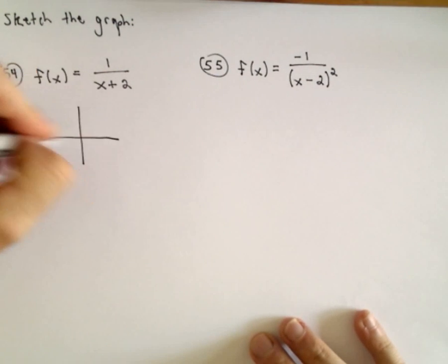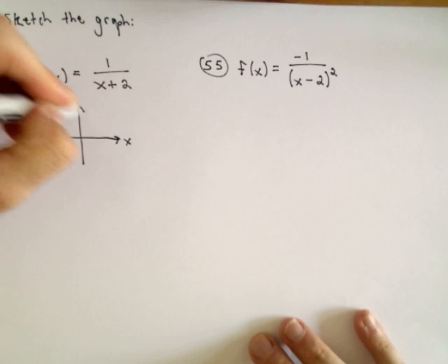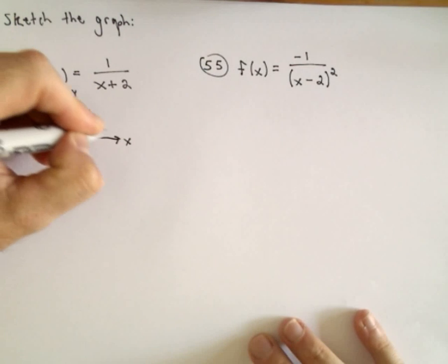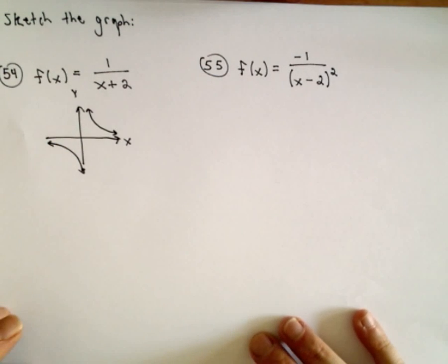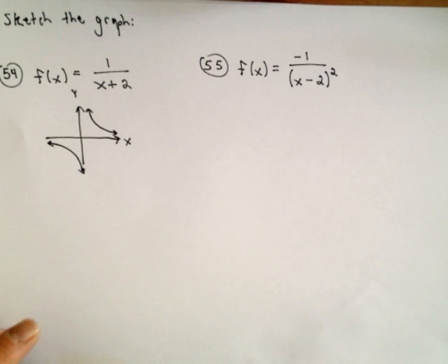Recall that the function 1 over x, the graph of 1 over x looks something like that. And again, you can always plot points if you forget these graphs.